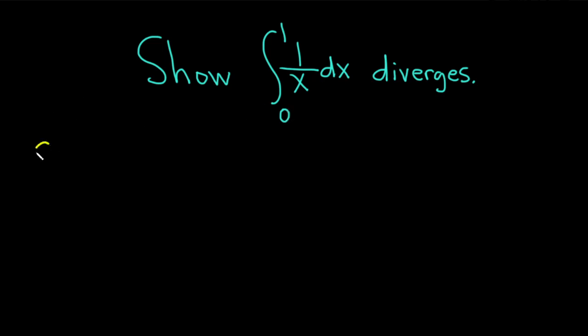Let's go ahead and work through it. Solution. We'll start by writing down our integral. So we have the integral from 0 to 1 of 1 over x dx.